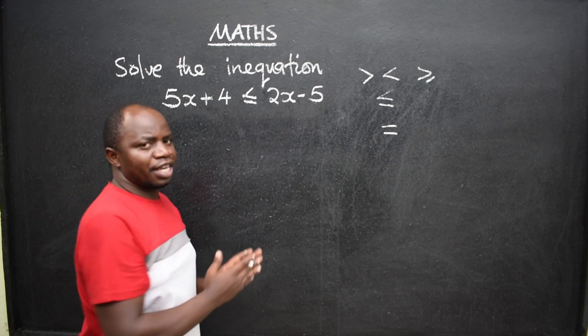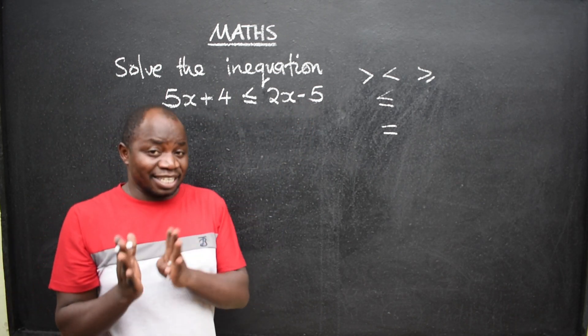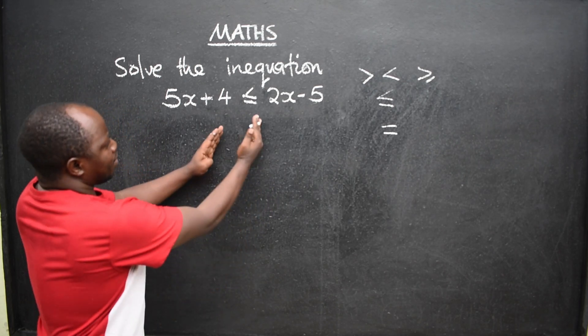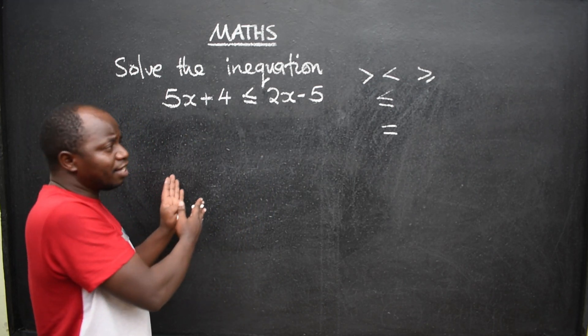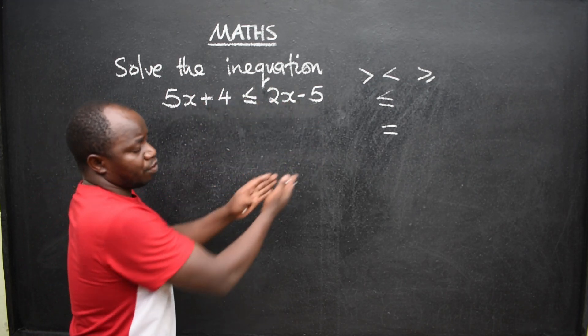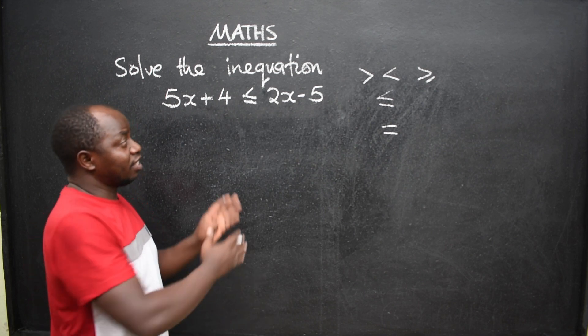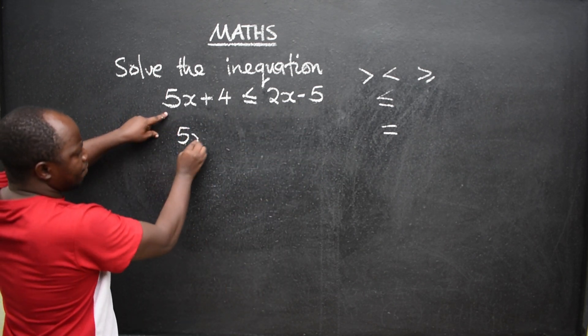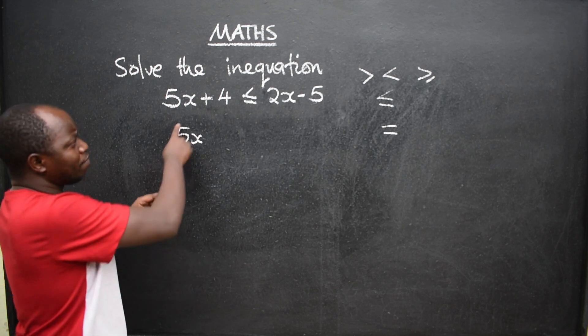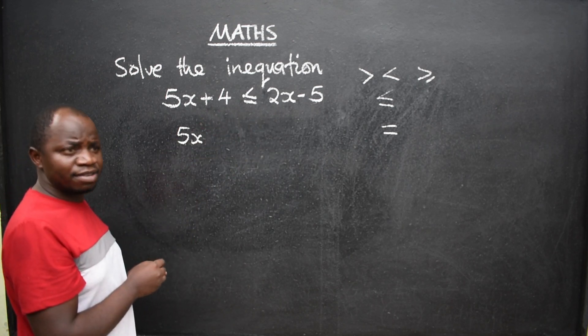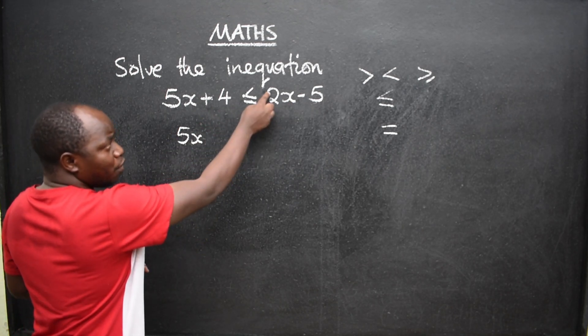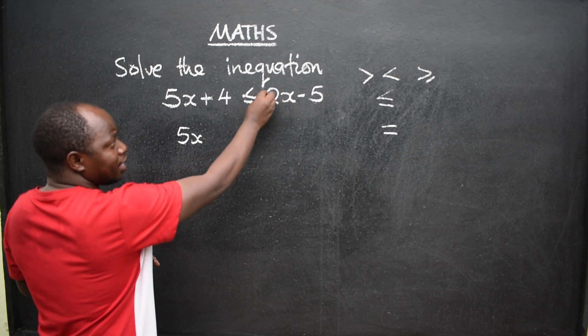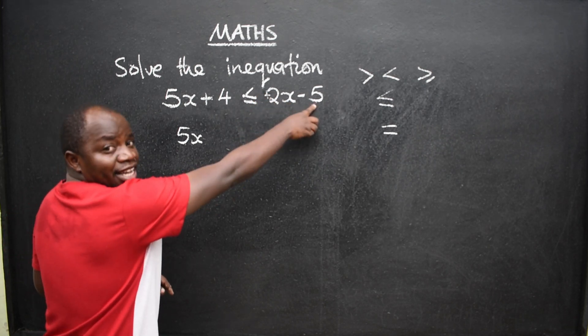The first thing that you are going to do here is to collect like terms. Those with x must come on the left-hand side. Those without x must cross on the other side, which is the right-hand side. So here, I've got 5x. Do we have a pair here that has got x? Here.